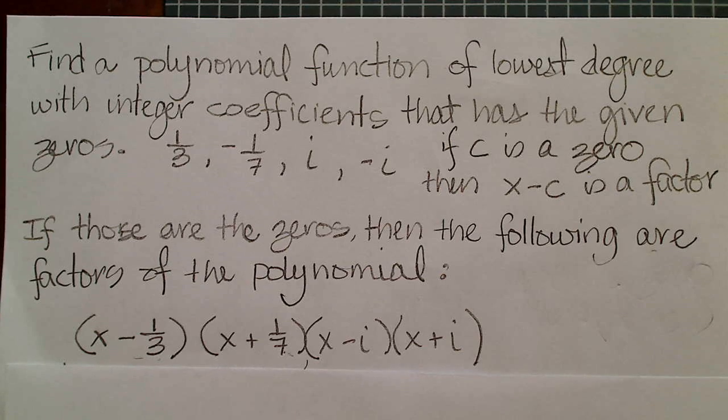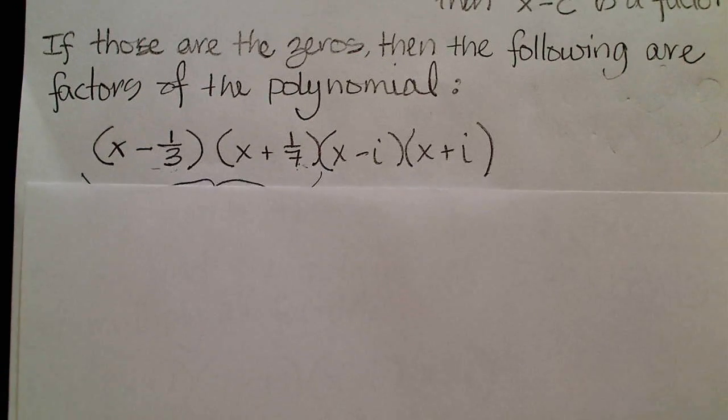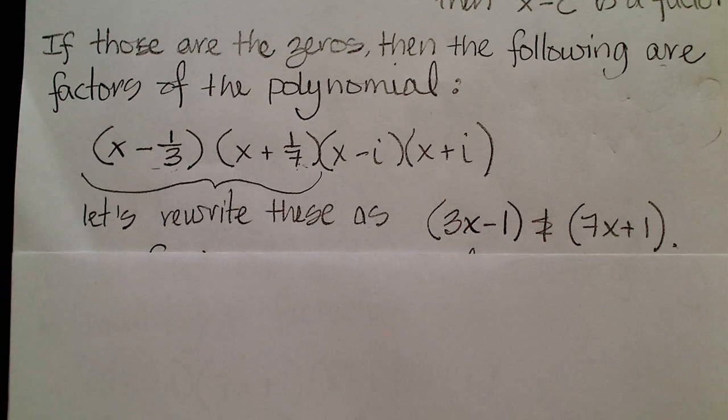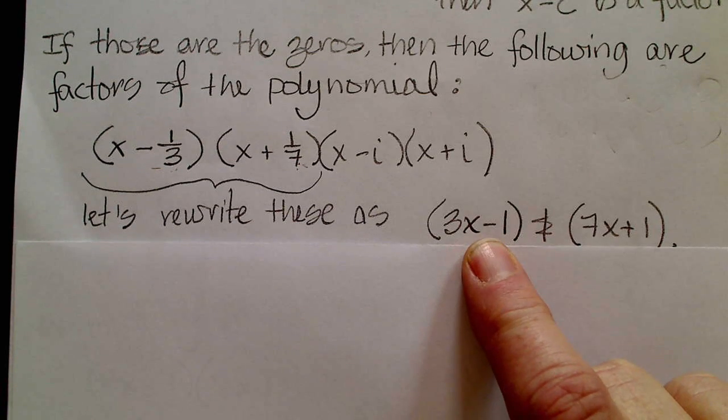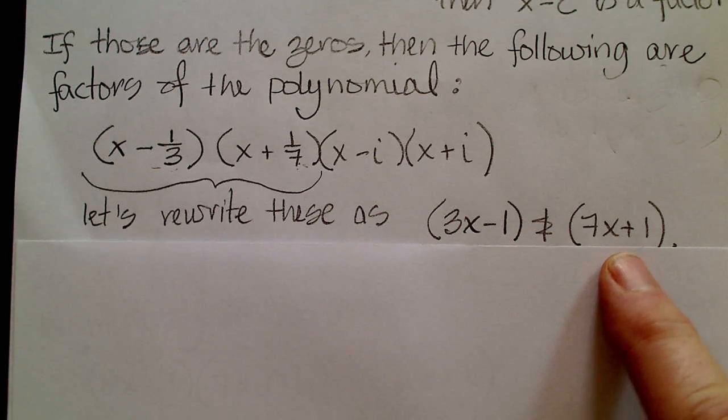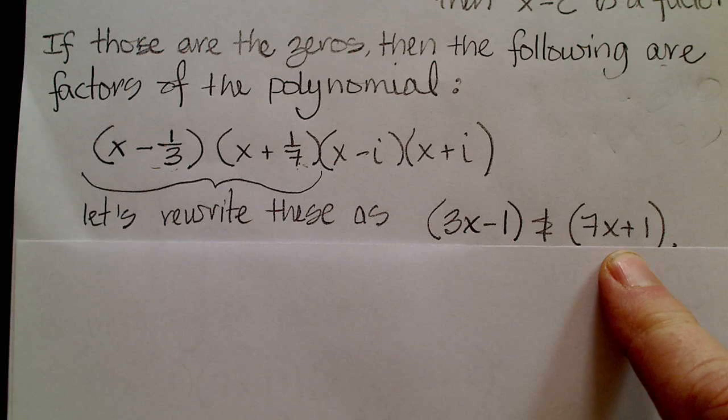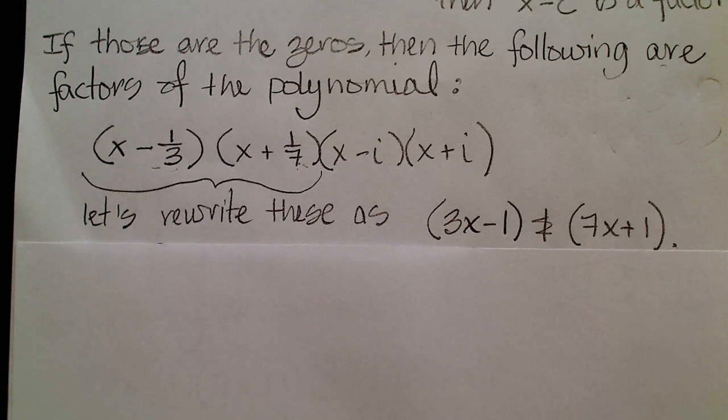But my problem asked for integer coefficients. I need to get rid of these fractions. So I can rewrite those factors as three x minus one and seven x plus one. I get the same zero here. I get the one-third as a zero if I set that equal to zero and solve for x. And here I get negative one-seventh if I set that equal to zero and solve for x.